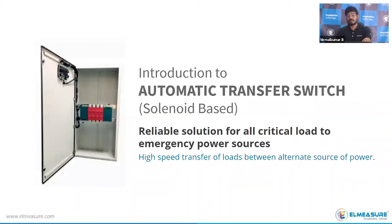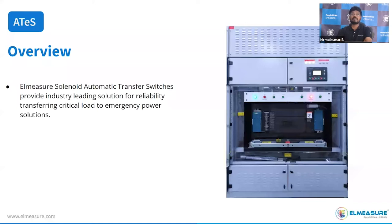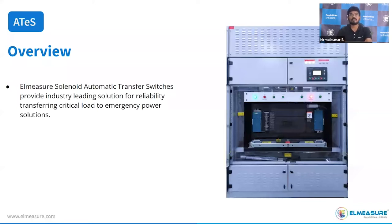ASCO offers open transition, close transition, delay transition, and bypass maintenance models — and apple-to-apple, we cover all these product categories. Our solenoid ATS product range is from 16A up to 6300A. This product is majorly required in data centers, hospitals, airports, metro projects, and banking and finance — wherever even minimum power interruption is not acceptable.